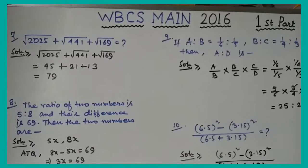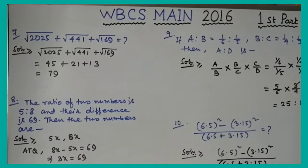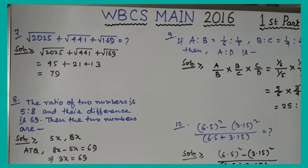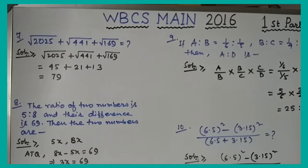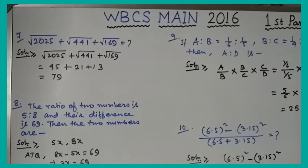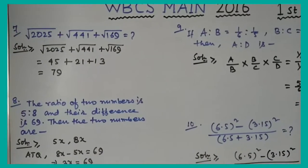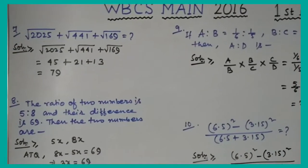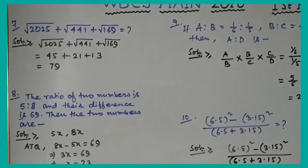Question number 7: √2025 + √441 + √169. We know √2025 = 45, √441 = 21, and √169 = 13. So the answer is 45 + 21 + 13 = 79.